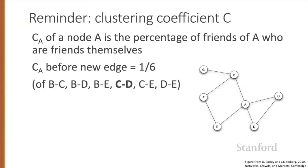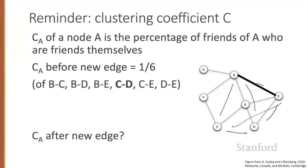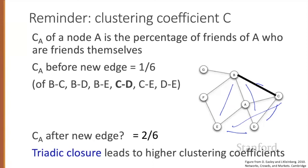How does triadic closure affect the clustering coefficient C? The clustering coefficient C for a node A is the percentage of friends of A who are already friends themselves. C sub A before the new edge is one out of six possible edges — B to C, B to D, B to E, C to D, C to E, D to E — only one of them exists. After the new edge, there are now two out of six. So triadic closure leads to higher clustering coefficients.